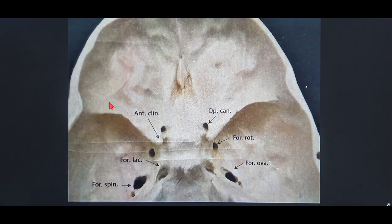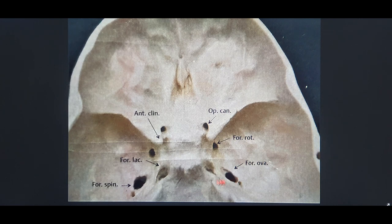This is a superior view of the anterior and middle cranial fossa from above. You can see the optic canal, the anterior clinoid process, the foramen rotundum, the foramen ovale, the foramen spinosum, and the foramen lacerum. I've also shown all the foramina in the skull base in my previous lectures — these are structures you need to remember for a long time.